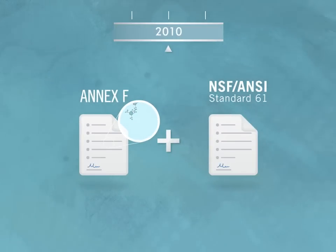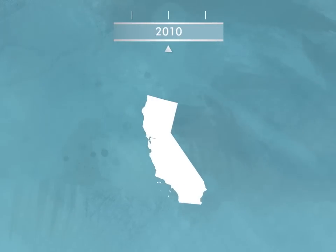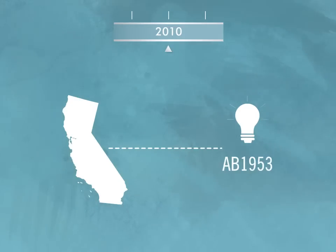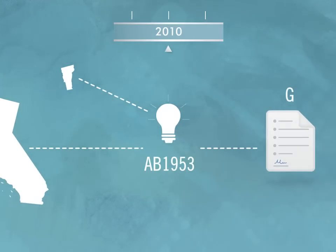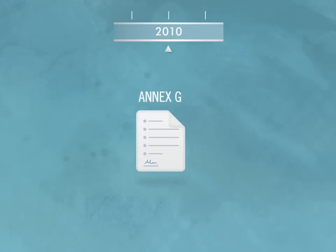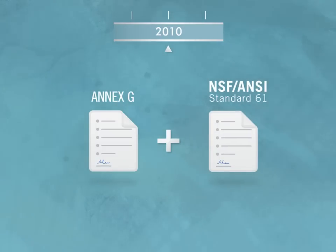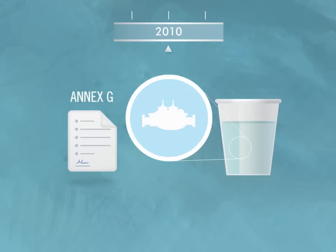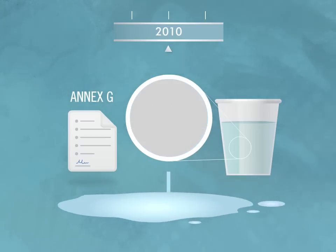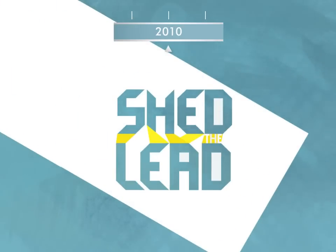Let's skip ahead to 2010. The NSF and ANSI decided California had a good idea in its regulation AB 1953 for lead content — and Vermont had pretty much the same idea. So to demonstrate compliance with California's regulation, along came Annex G, also added to Standard 61. With Annex G, they weren't looking at leaching but at the amount of lead in products and fittings that come into contact with the water we drink — a weighted average lead content of 0.25 percent or less, based on wetted surface area.